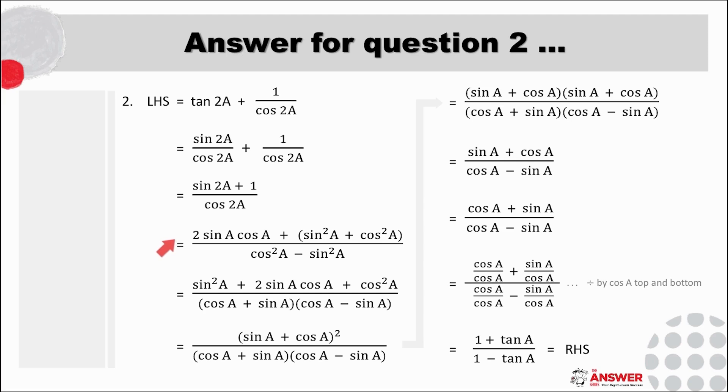In this case if we consider replacing the one with sin squared plus cos squared we can see a trinomial in sin and cos forming in the numerator. This then guides us to expand cos double angle using both sin and cos. In other words the option where cos 2A equals cos squared A minus sin squared A.